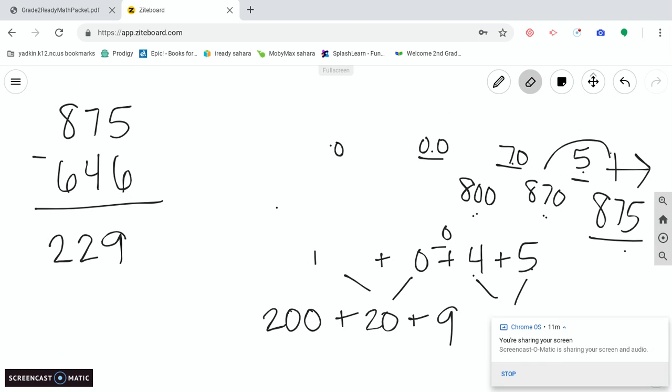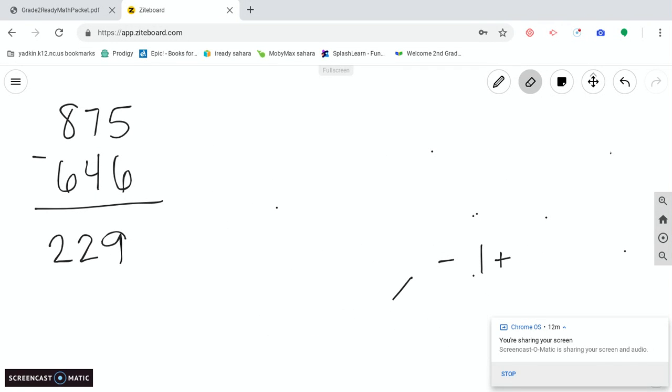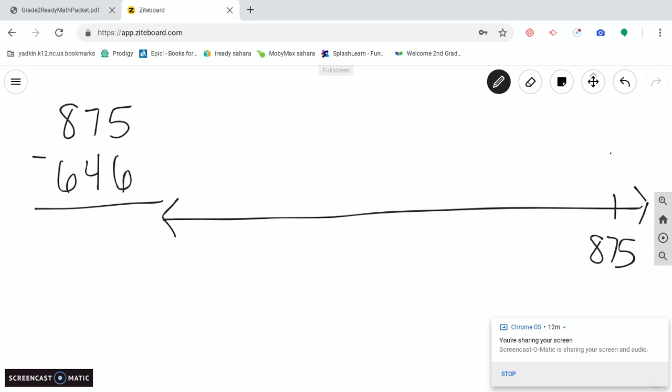Another way you could subtract on a number line is we can actually start with the bigger number just like we have in our problem and go back. I don't like this one as much. I think it's a little more difficult. But I know some of you like to do that. So I would start at 875. In this case, if I start at 875, I'm going to make sure that I subtract 646 in my jumps. So my answer will end up down here. My answer will actually be on my number line this time.